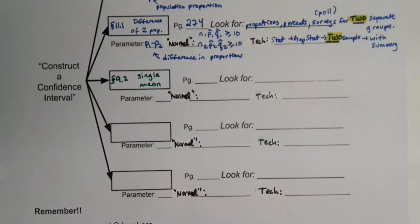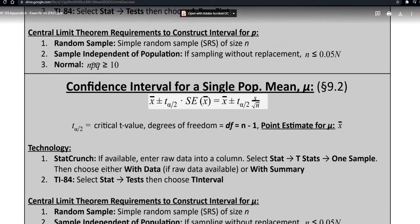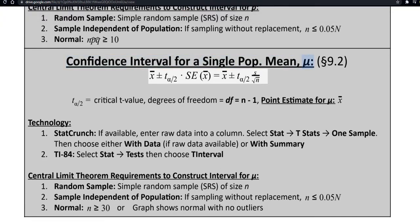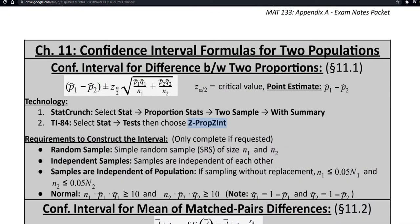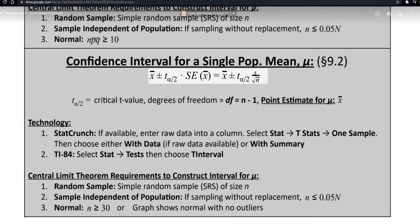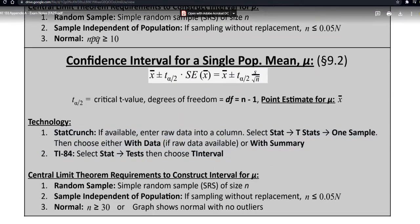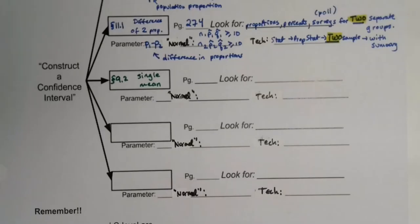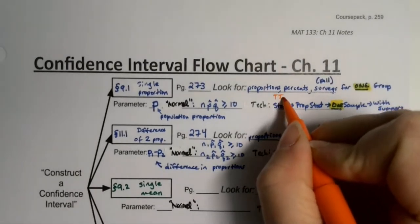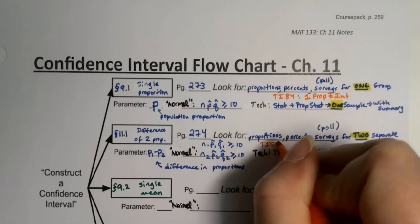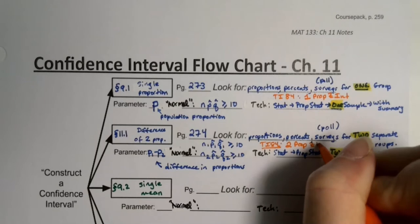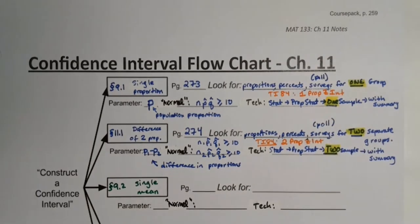I'll bring it up on screen — there's the single population mean, with parameter mu, the population mean. You're building an interval for mu, and you can see the formula and technology right there. For TI-84 users on the proportion intervals, I'll also add those in: single proportions use 1-PropZInt and two proportions use 2-PropZInt. For the single mean, the TI-84 uses TInterval.